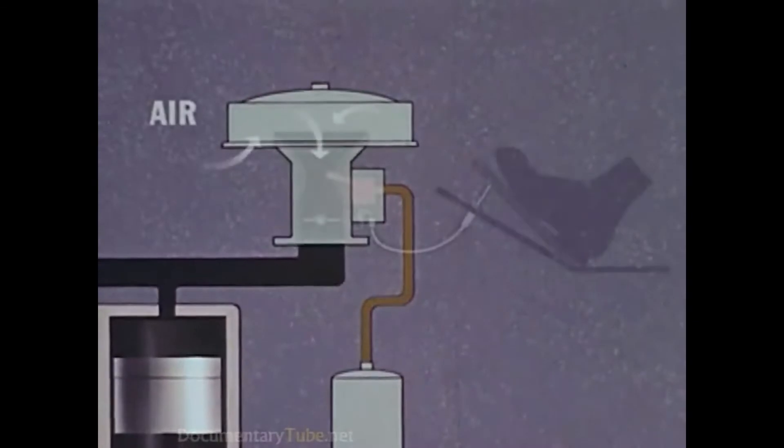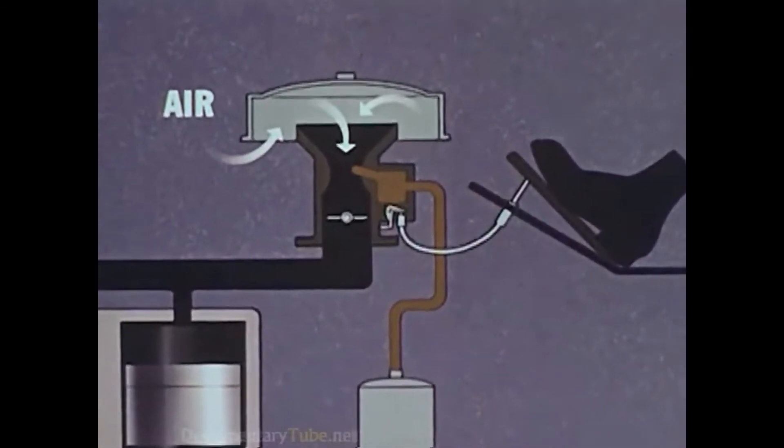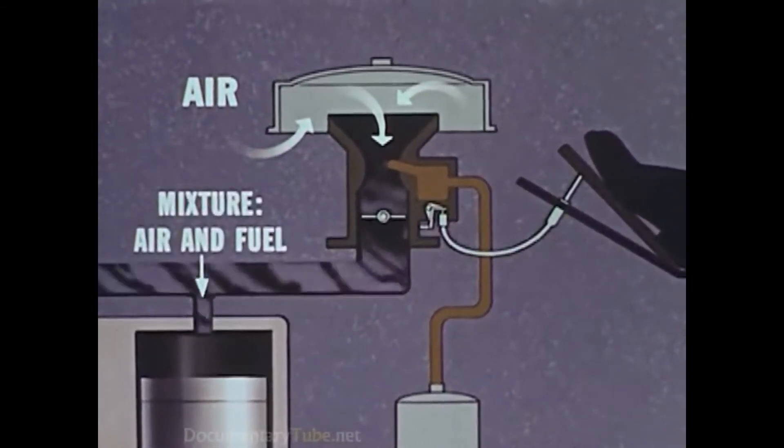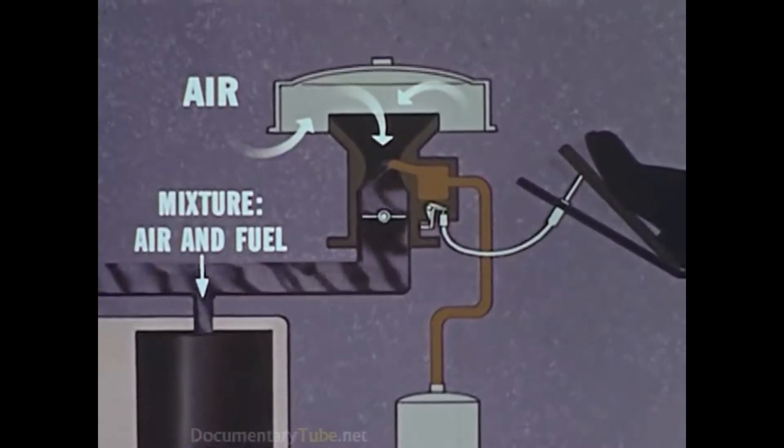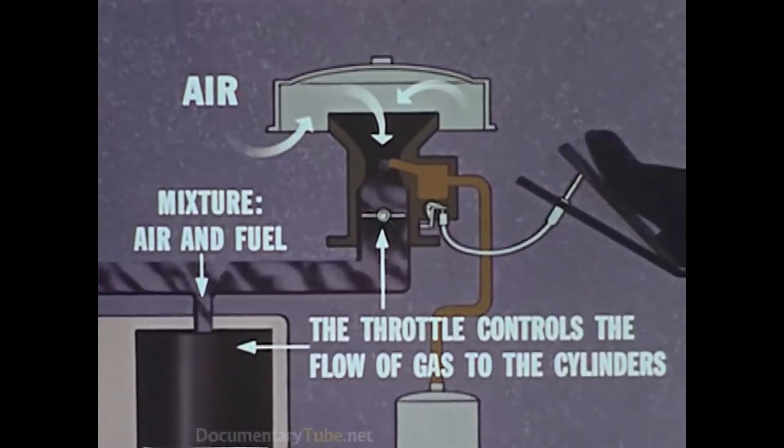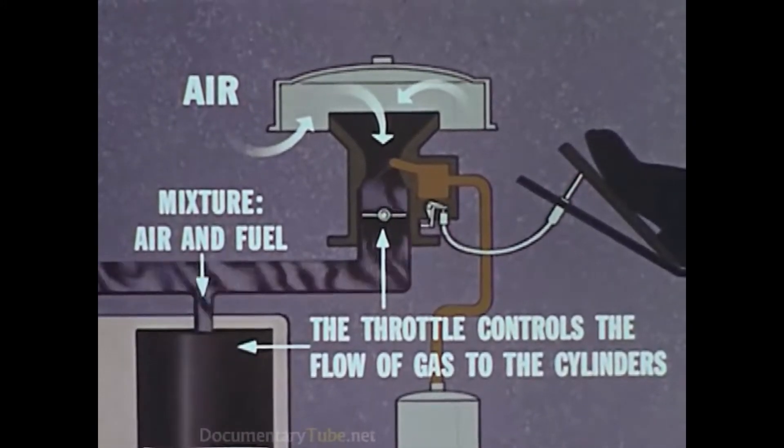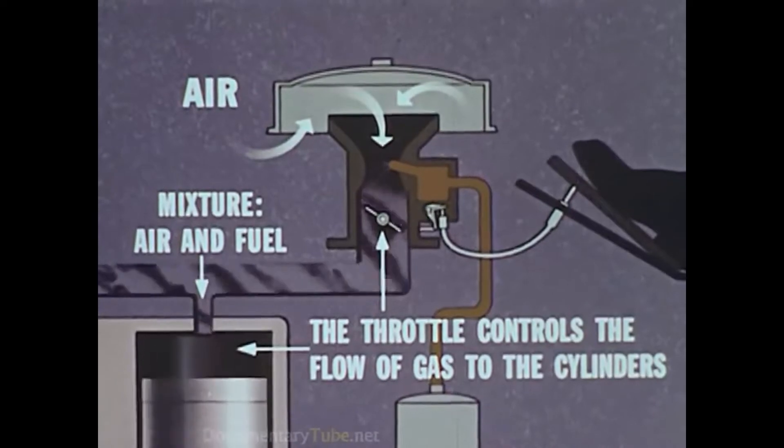Here's a closer view of the carburetor. A linkage connects the accelerator pedal with a valve in the carburetor. Stepping on the gas opens this valve wider, increasing the gas flow and speeding up the engine. Easing off on the pedal reduces the flow and the engine slows down.